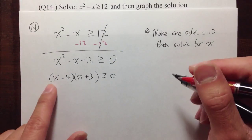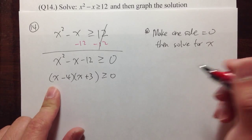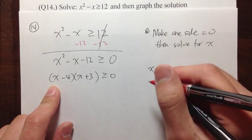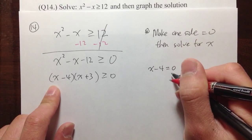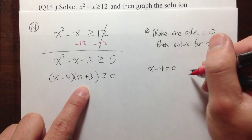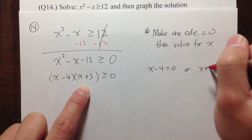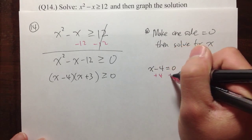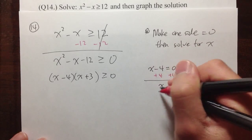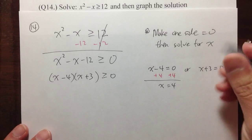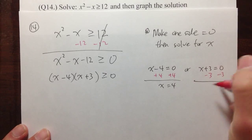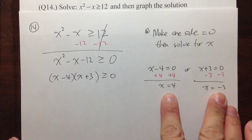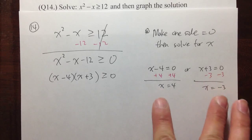I'm going to pretend this is an actual equation and solve for x. So I set x minus 4 equal to 0, and the second case is x plus 3 equal to 0. Adding 4 on both sides gives x equals 4. Subtracting 3 gives x equals negative 3. These are the two critical values we're going to consider.